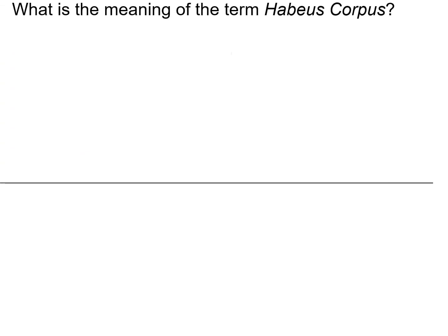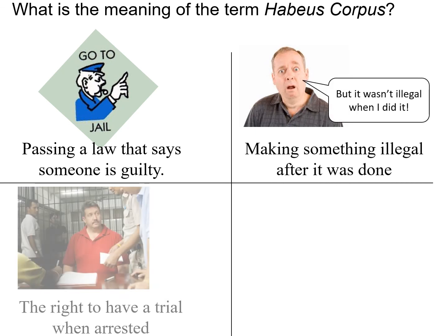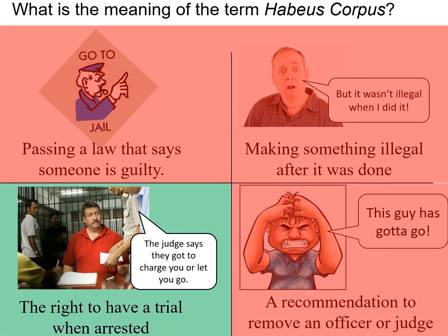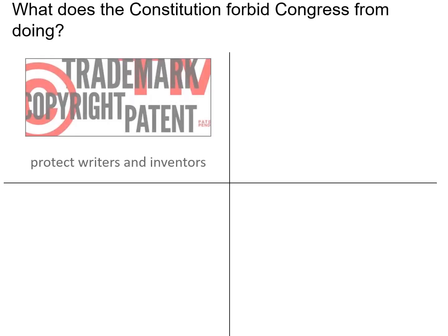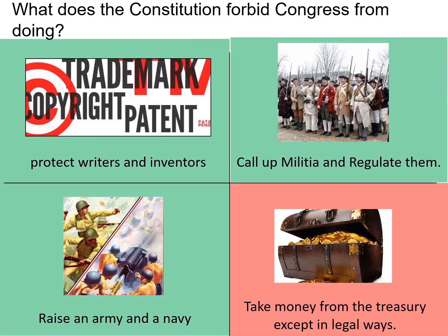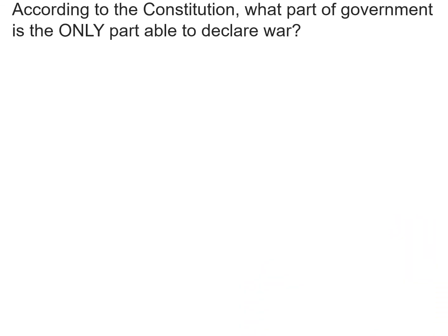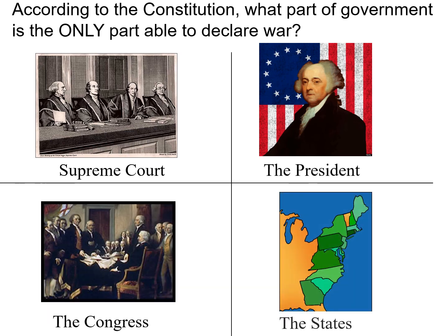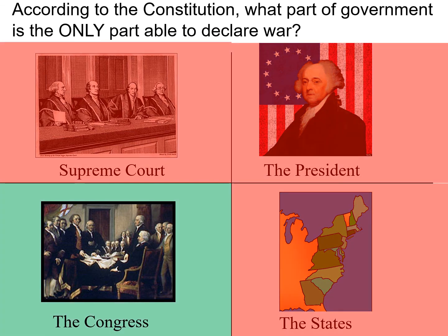What is the meaning of the term habeas corpus? Habeas corpus is the right to have a trial. What does the Constitution forbid Congress from doing? It forbids them from taking money from the Treasury except in legal ways. According to the Constitution, what part of the government is the only part able to declare war? Only Congress can declare war.